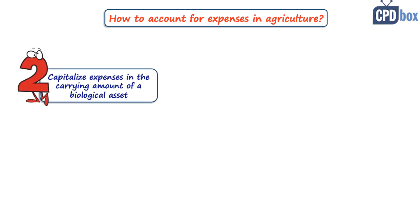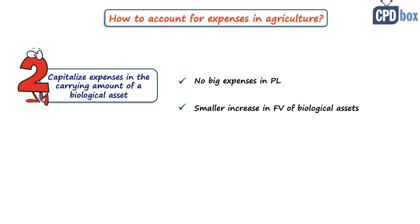Under option two, you add the expenses to the carrying amount of the biological asset. This way you do not show big expenses for agricultural activity in your profit or loss, and you also show a smaller increase in fair value of your biological assets. In my opinion, this method reflects fair value changes better than the first method, but it is more demanding and challenging.